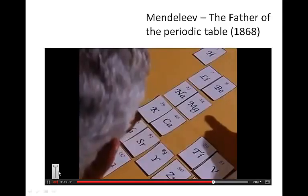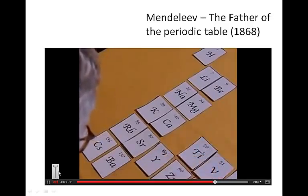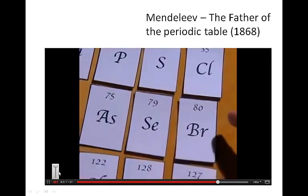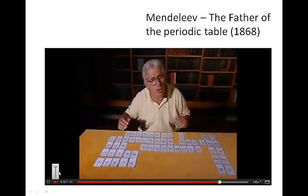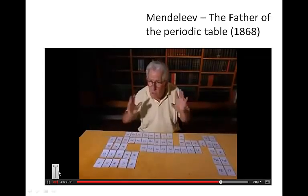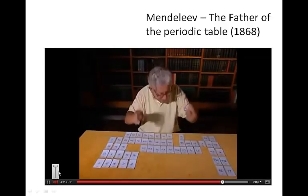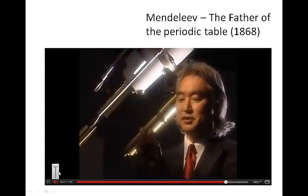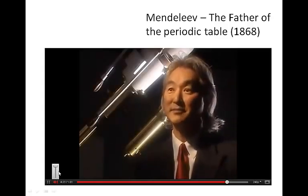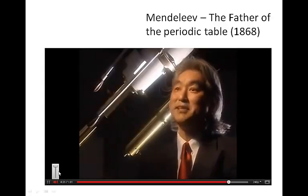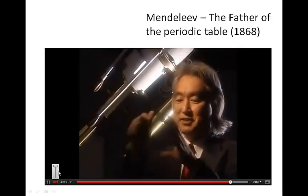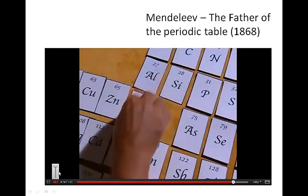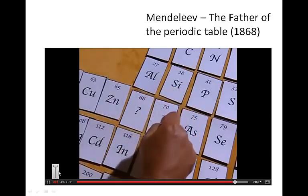Then the alkaline earths — beryllium, magnesium, calcium, strontium, barium. And over on the other side, the halogens — fluorine, chlorine, bromine, and iodine. He was so sure that he'd got it right that he also made a really important discovery. Look at these gaps — gaps where elements should have been, but none existed. So he made a prediction. He had the daring to say that perhaps these are the elements we should look for. There was one gap between aluminium and indium, another between silicon and tin.